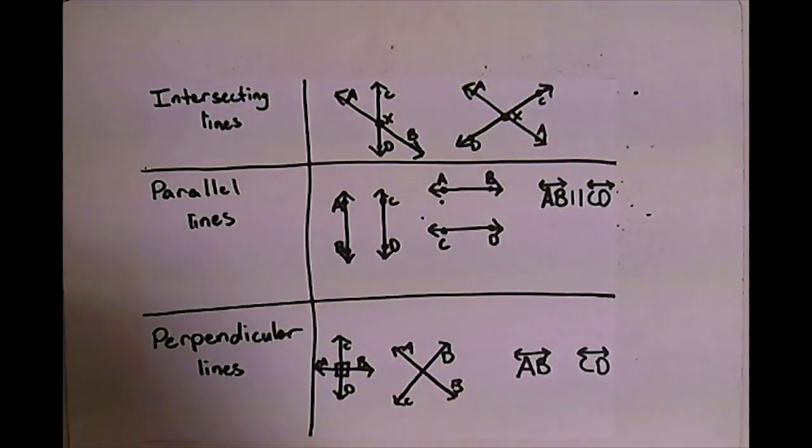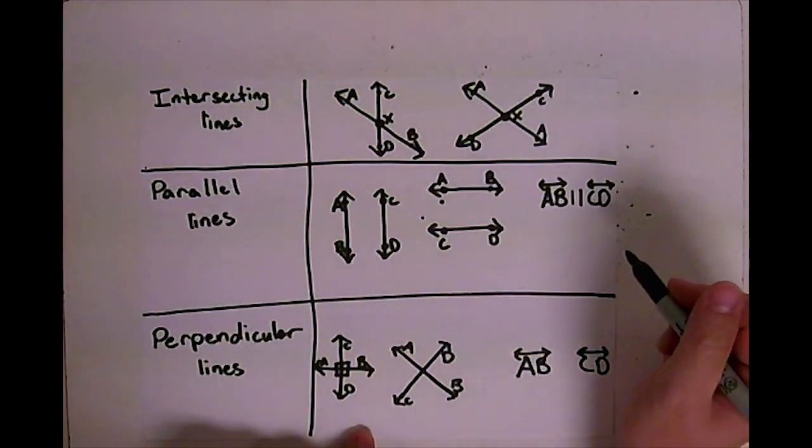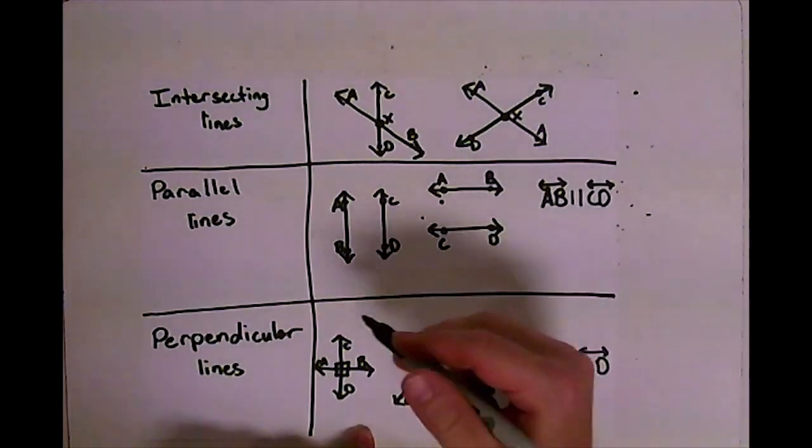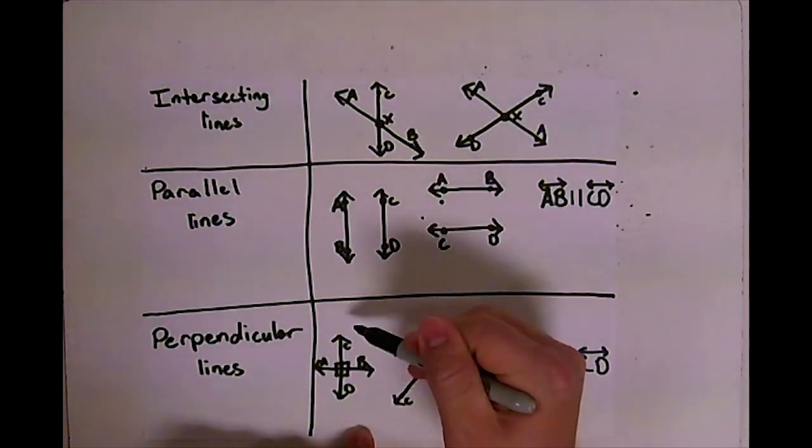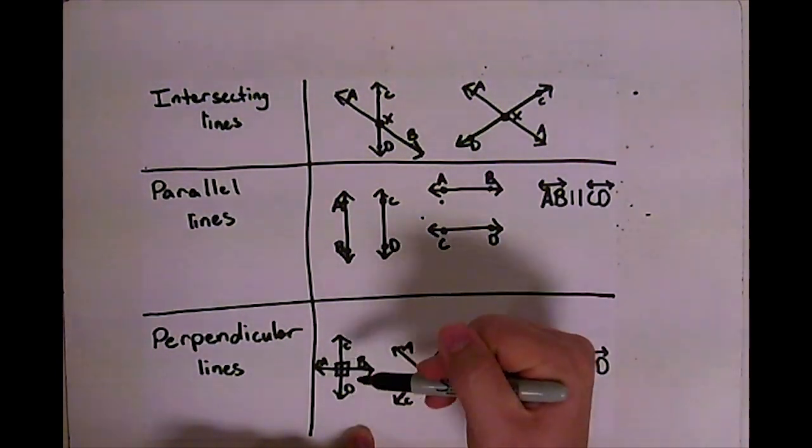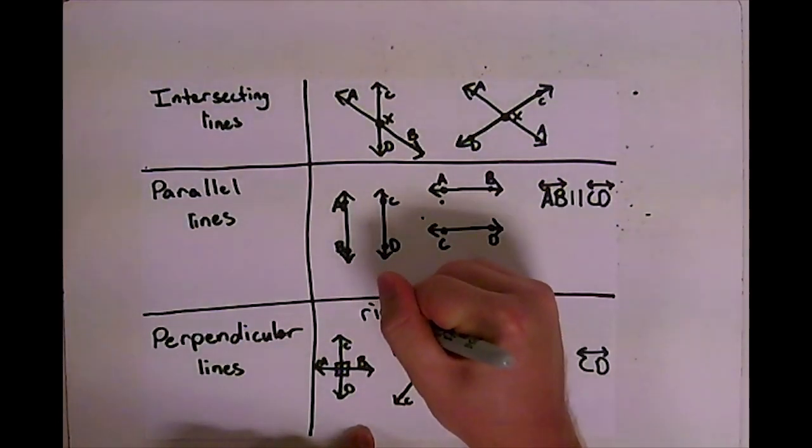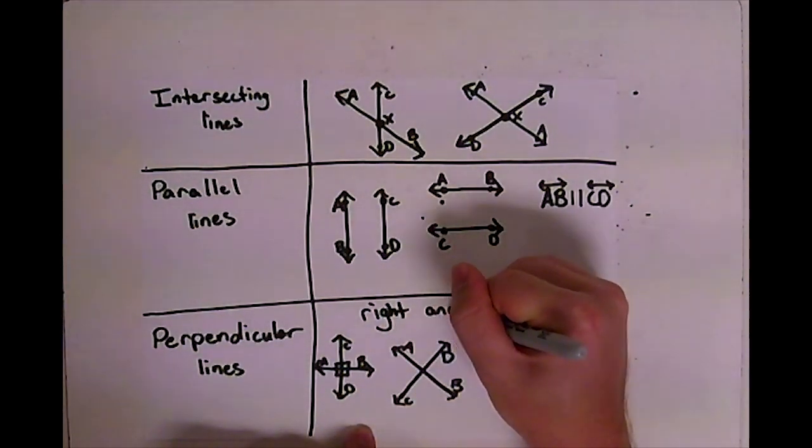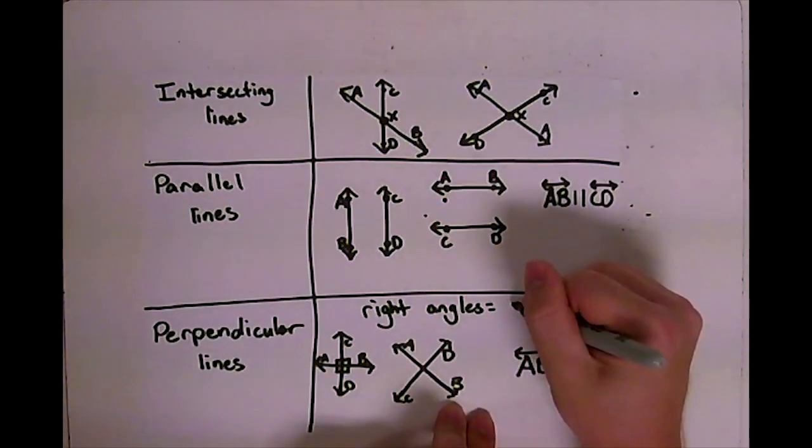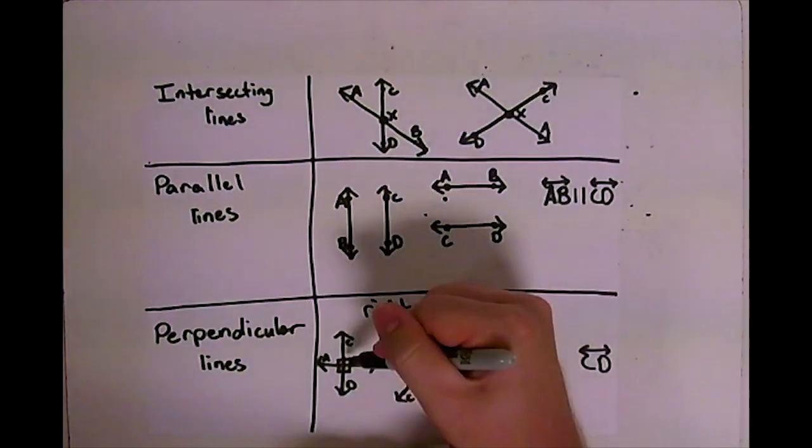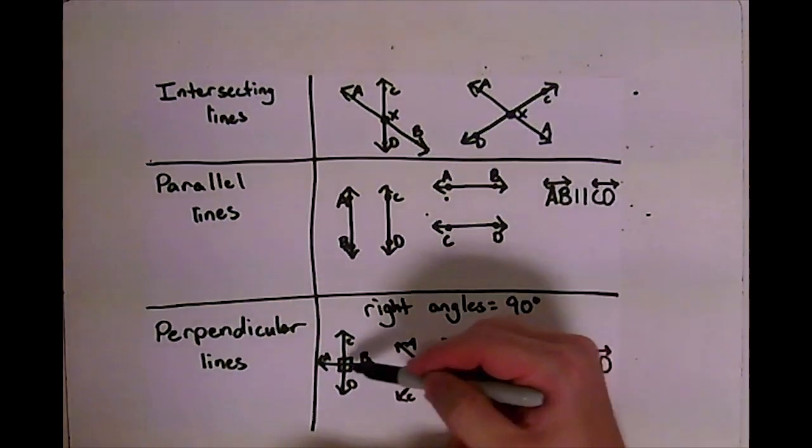Now down here perpendicular lines, you're gonna see a lot of different versions of this. I'm gonna show you these two really quick. So line AB is perpendicular to line CD. Now the rule here is they have to form right angles, which equals 90 degrees. So if this is a right angle, the rule is all of them are gonna be right angles.